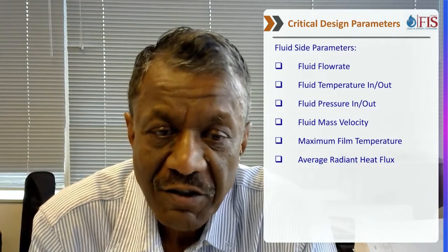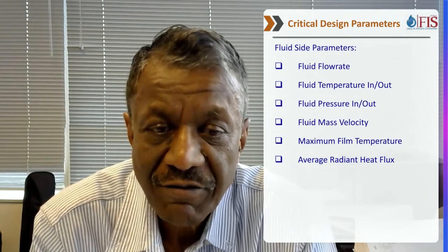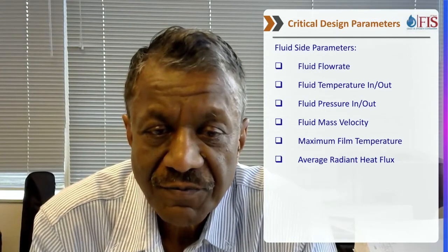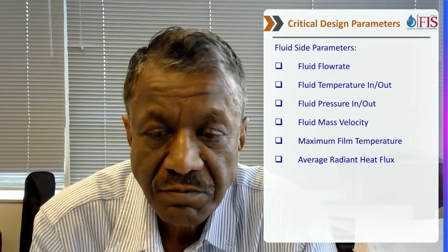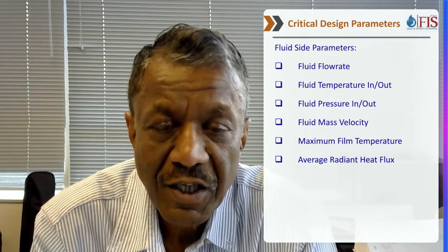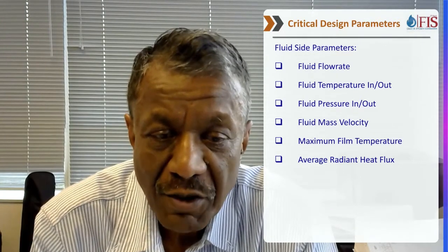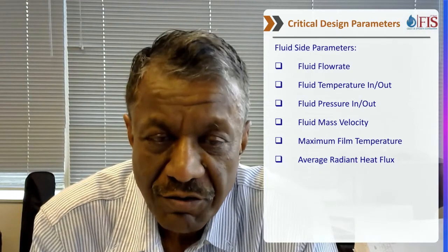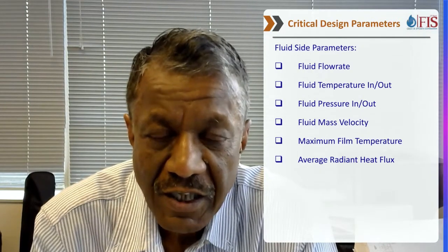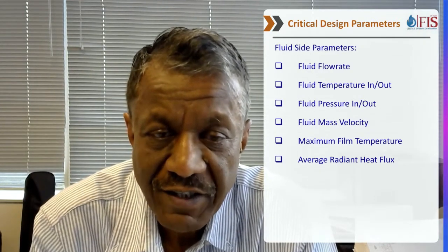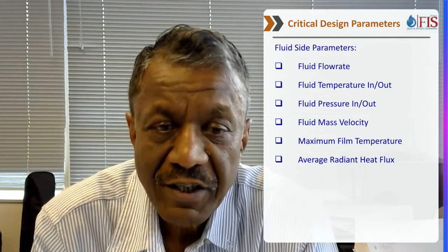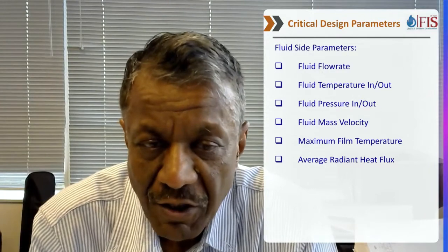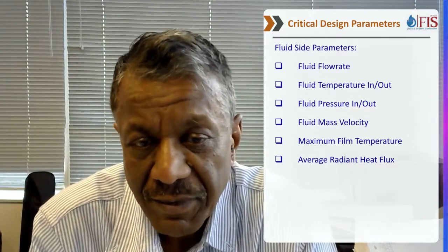The first thing we want to know is how much fluid are we heating — what is the flow rate of that fluid. That will determine a number of parameters in the fire heater: the number of passes, the tube size, and all the hardware for the radiant section and convection section design. We need to know the fluid flow rate; it can be given in pounds per hour, barrels per day,